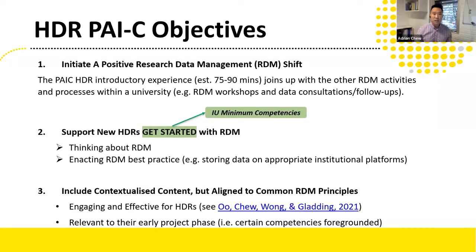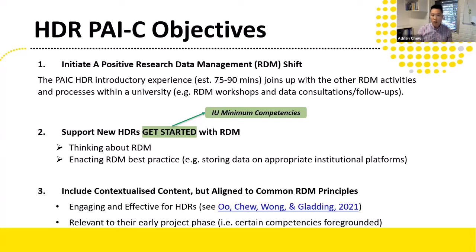From the IU framework and the collective RDM experiences at the three universities, we came up with objectives to ring-fence the PISC design and content. The first acknowledges that training is just a piece of the puzzle if you're trying to achieve behavioral change around RDM best practice, and whatever we are doing must join up with and be consistent with university policies, processes, and systems. The second objective is that PISC is specifically designed with new HDRs in mind, just to get them started with RDM, linking back to the IU baseline competencies, with both a thinking and doing component. The third objective is that to be engaging and effective, the content will be highly contextualized without losing the common RDM principles component, and will be relevant to the HDR's early project phase.